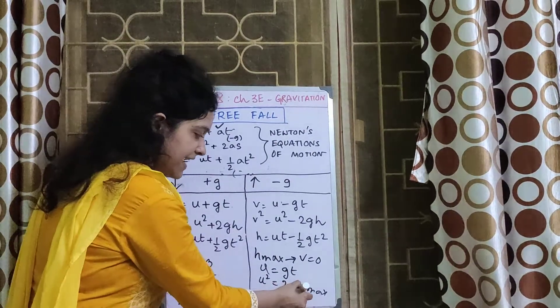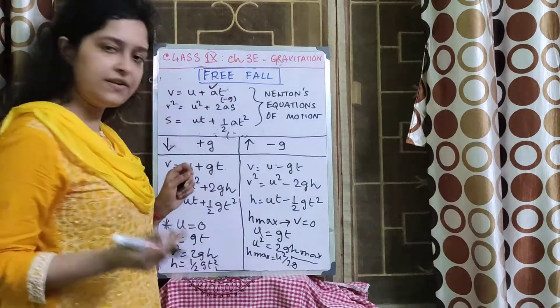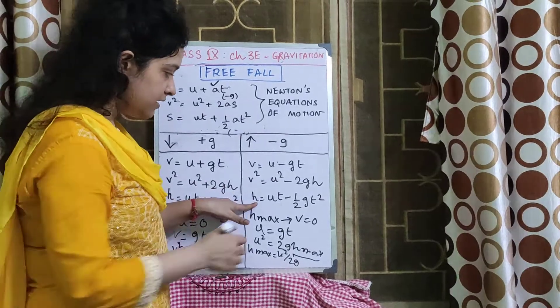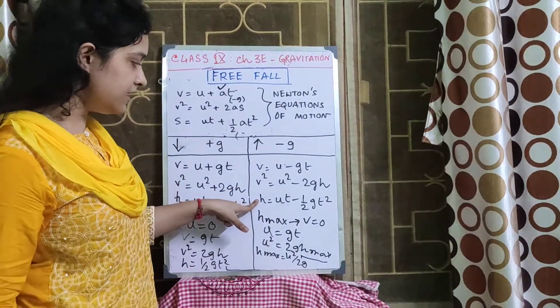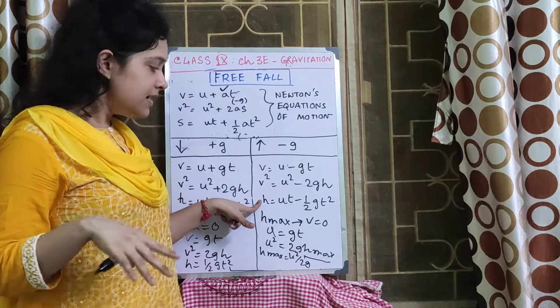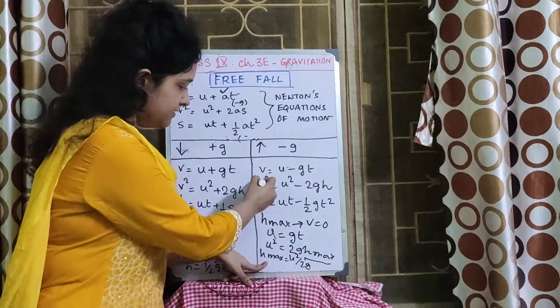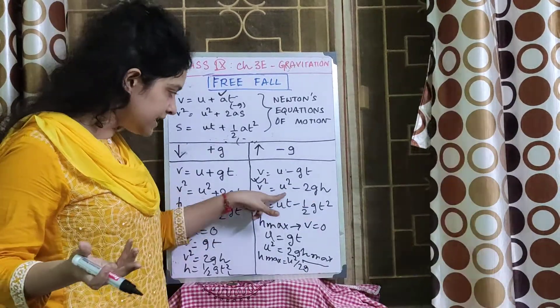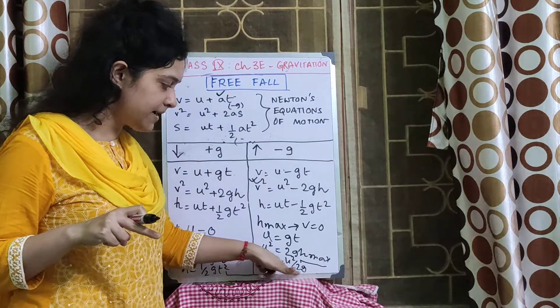So can I write H max as U square by 2G? Obviously I can write this from here. H max is equal to U square by 2G. What about this one? H max is equal to UT minus half GT square. This will remain same, no change, because we don't have V here in this form. So if I have to calculate the H max and I know the initial velocity, which one will I use? This one, because if I know this and G is always constant 9.8 or you can use 10, I can calculate H max from this equation.